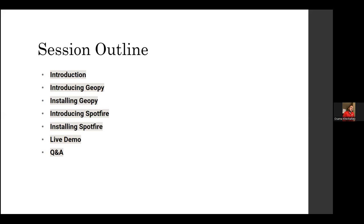Followed by an introduction into two particular software or libraries that we're going to be using. One of them is a Python library called GeoPy. And then the other one is a software for data visualization called Spotfire. We're going to describe each and then go over the methods to install them and have them available on your machines. And finally, after this short presentation, we're going to go into a live demo showing in depth how we're going to actually process the data that we have using these tools. At the end, we're going to have a quick Q&A session.